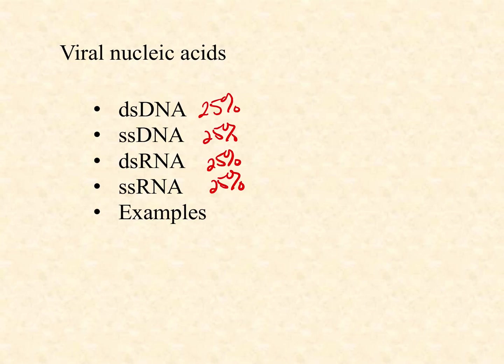Roughly 25% of all the viruses that infect people fall into one of each of these categories: double-stranded DNA, single-stranded RNA, single-stranded DNA, and double-stranded RNA. Those last two are really weird — we don't see those much in the world of living cells. That's one of the many ways that viruses break from tradition. I'm going to talk briefly about each of those four categories.